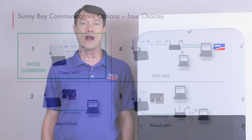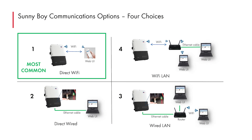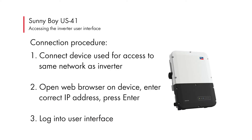The Sunny Boy US-41 inverter supports wired Ethernet or 2.4 GHz Wi-Fi communications as standard. The graphical user interface of the inverter is accessed via a web browser running on a device that is on the same local area network as the inverter or directly connected to the inverter. Accessing the user interface is a simple three-step process.